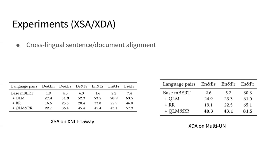In an attempt to understand the direct cause of improved CLIR and CLQA performance, we performed two additional experiments: cross-lingual sentence and document alignment. The goal is to test if a multilingual language model is able to map parallel sentences or documents close to each other in their shared multilingual space. The models pre-trained with our proposed tasks and data significantly boost alignment performance compared with the base multilingual BERT, with especially impressive improvement on document alignment, which is essential for document retrieval.